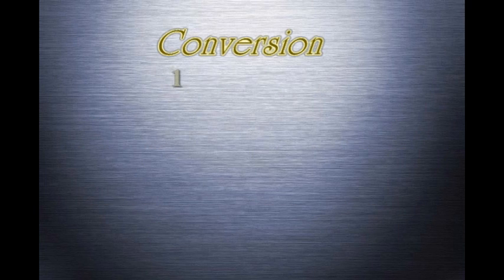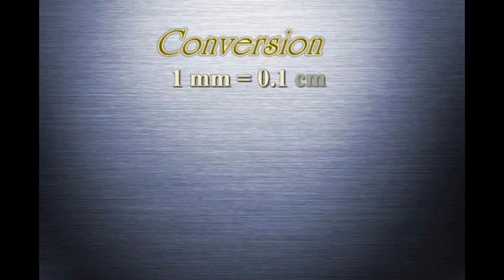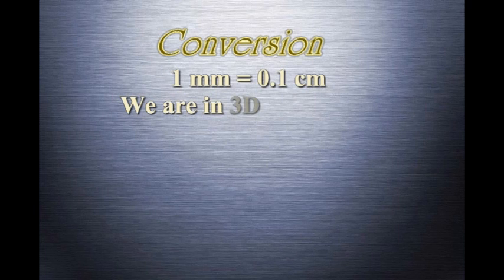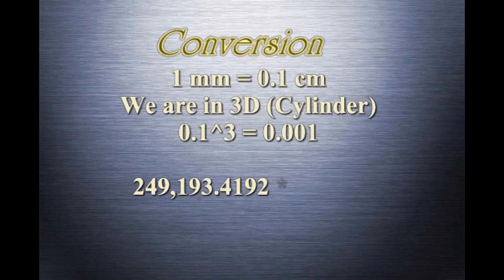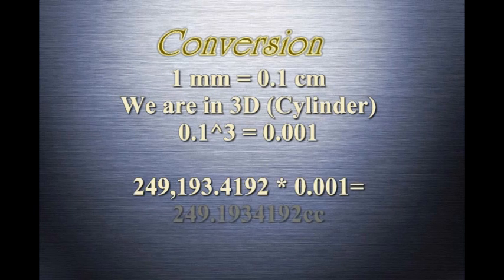To do the conversion, we know that one millimeter is 0.1 centimeters. However, because we are in 3D space — a volume of height, width, and length — we need to take 0.1 and cube it to get the conversion constant we actually need. So 249,000 multiplied by 0.001 equals 249 cc's.